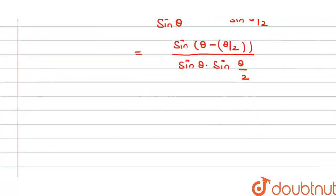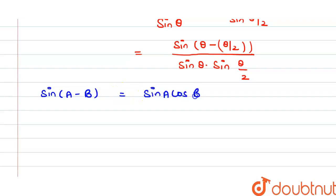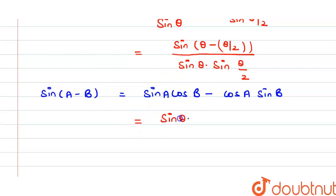Now, we know that sin(a − b) = sin a cos b − cos a sin b. If we apply this identity here in the numerator, then this will be sin θ · cos(θ/2) − cos θ · sin(θ/2).